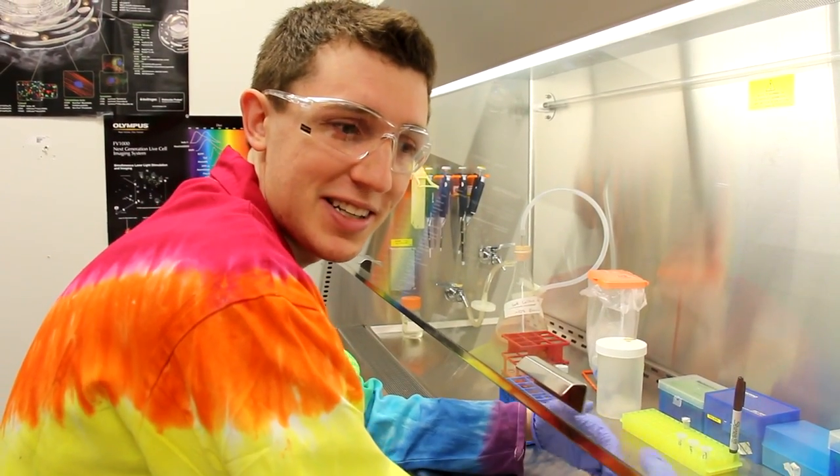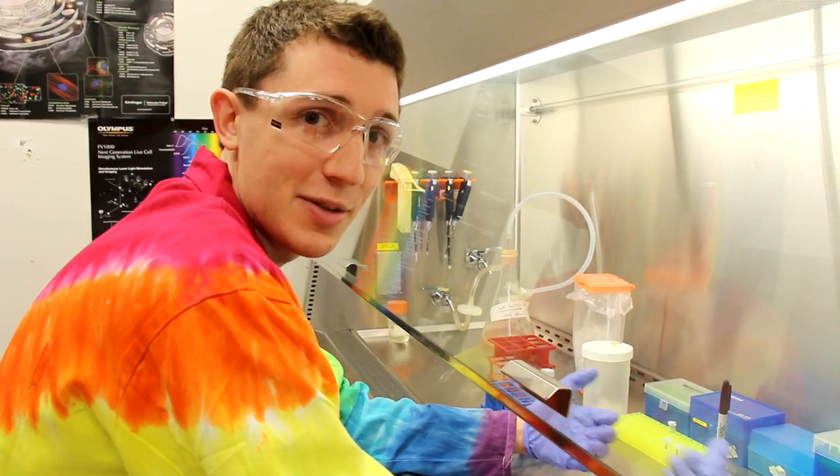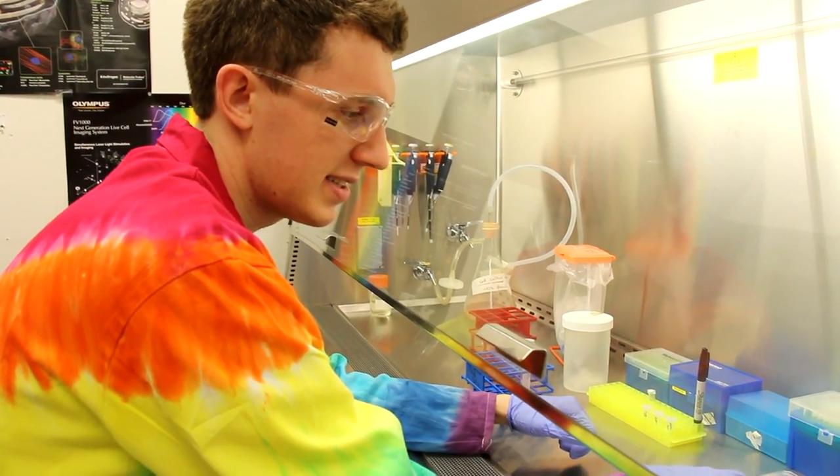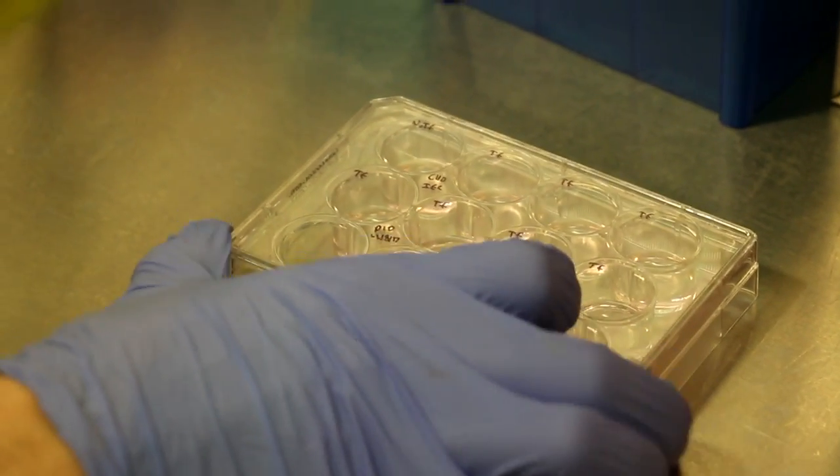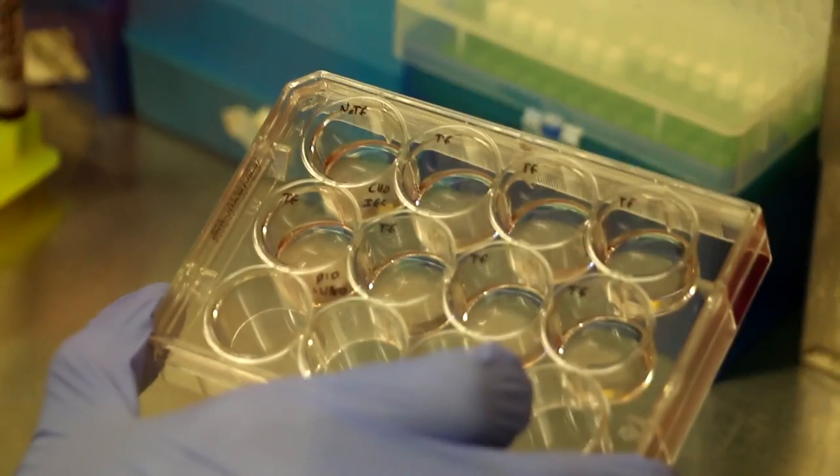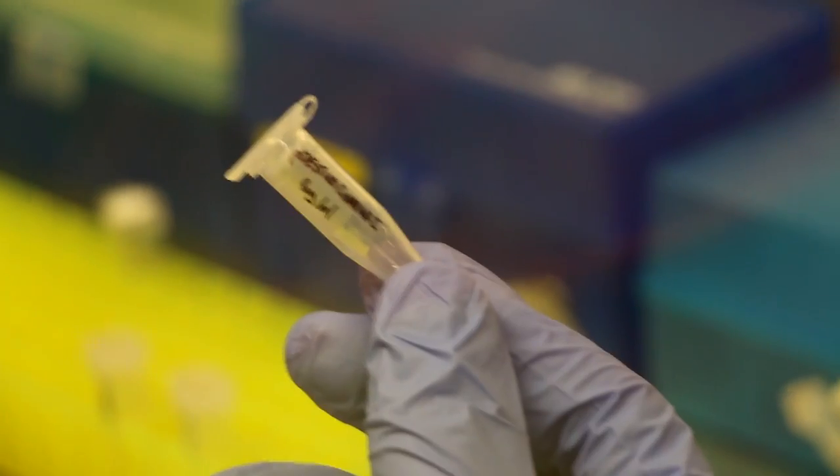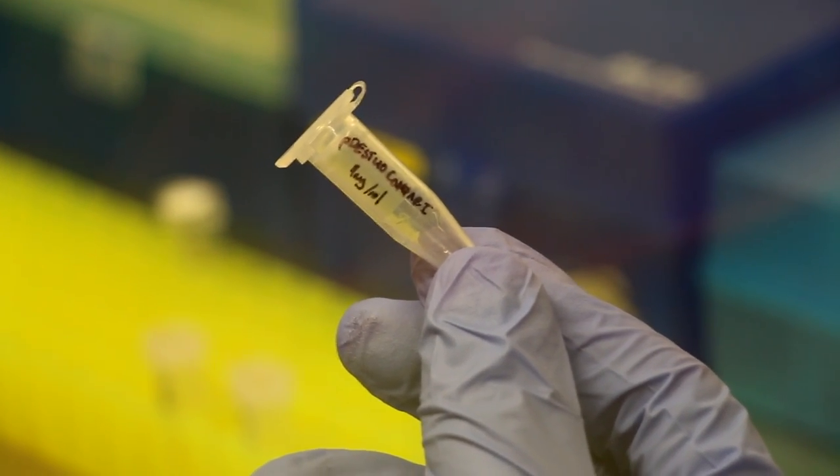Before we get started on this protocol, you're going to need to collect all the reagents necessary to perform it. The first thing you'll need is a 12-well plate containing your cells. In this case, they're Chinese hamster ovary cells. Second thing you'll need is a tube of DNA. We're using PDS-40 Campari at a concentration of 1 microgram per microliter.